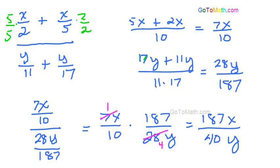Right? And that shouldn't reduce down any at all. So there you go. 187x over 40y.